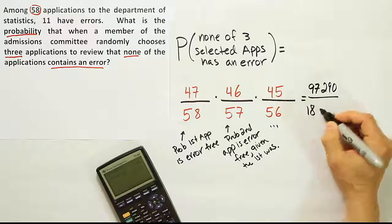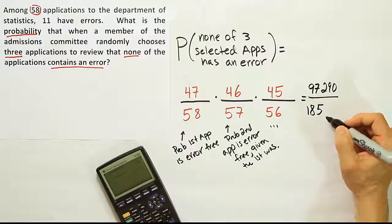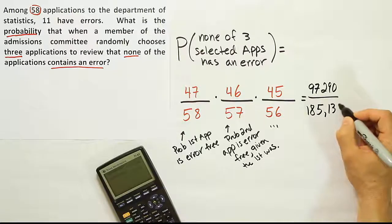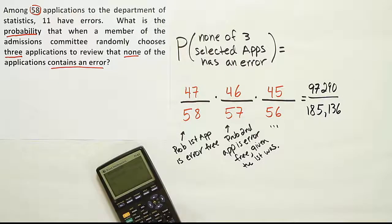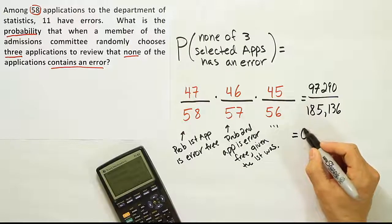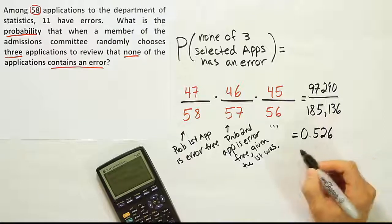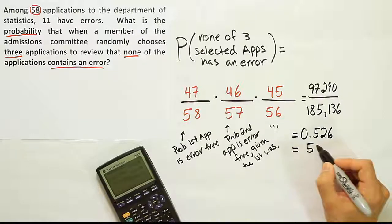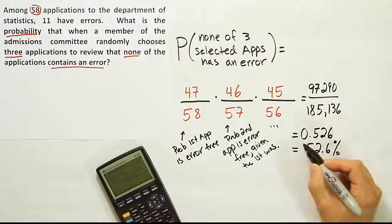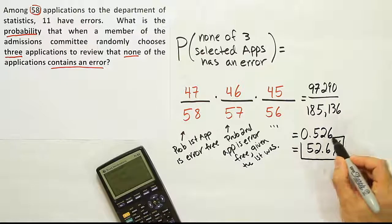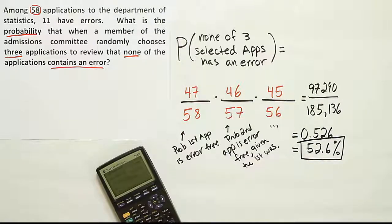And then we divide those two. We'll have 97,290 divided by 185,136. And when you do that, you get this final answer 0.526 or basically 52.6%.